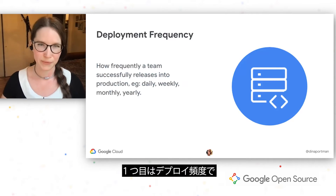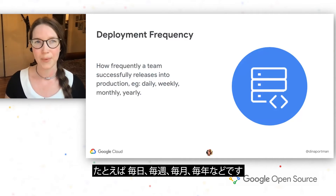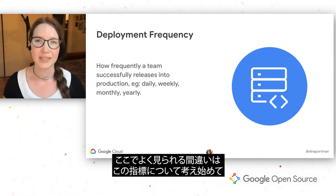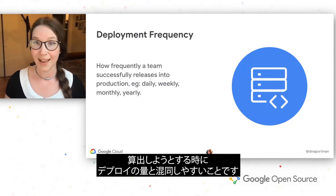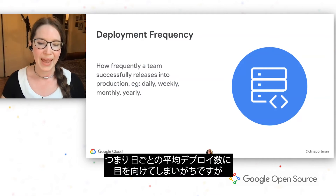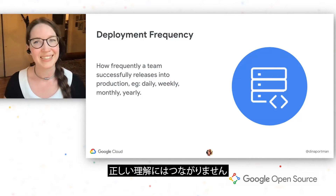The first one is deployment frequency, which is how frequently a team successfully releases into production — for example, daily, weekly, monthly, yearly. A common mistake I see when people start thinking about this metric and they start trying to calculate it is it is easily confused with deployment volume. What we see is people looking at the average number of daily deployments, which is a little bit misleading.